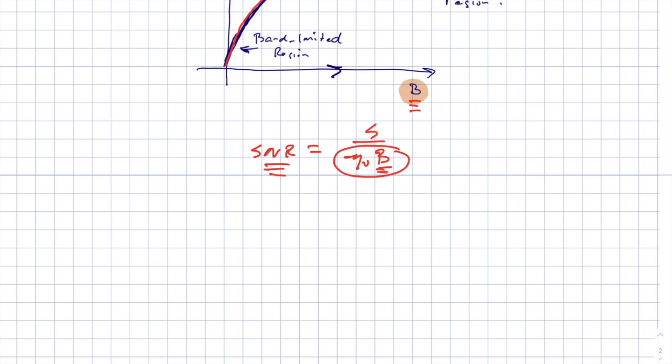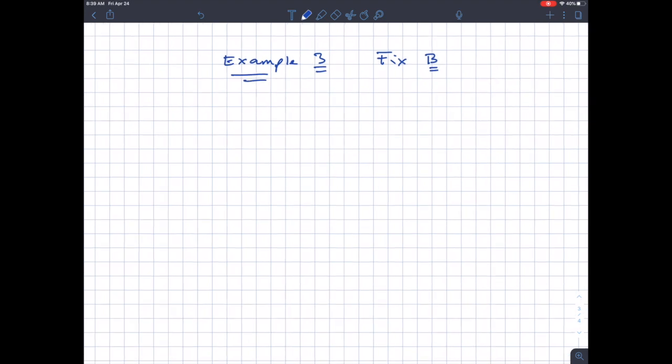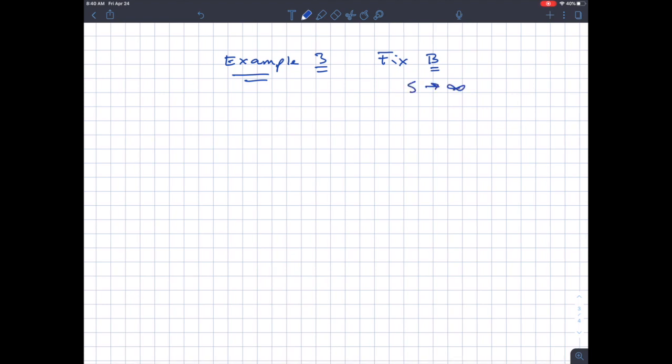And in example number three, we're going to go through the case where you constrained the bandwidth and see what happens. In example number three, we are going to fix the bandwidth, and we're going to let the signal power, that's what we're going to do. We're going to let S go to infinity, the signal power. This case is relatively straightforward, because it's easy to compute.